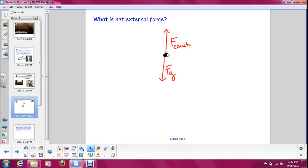When I say net external force, that means the sum of the forces in a given direction. So both of our forces right now are up and down. We do not have any across forces, so we don't have to worry about this way. We're only going to look at up and down.